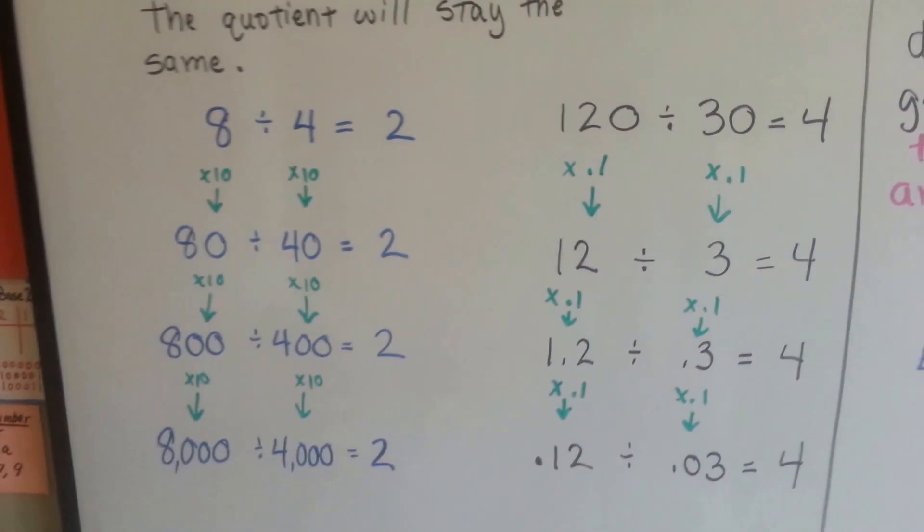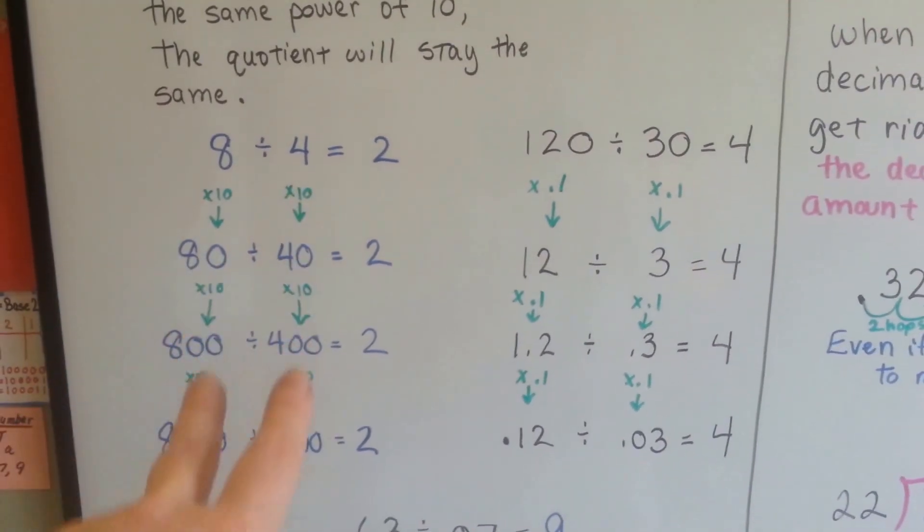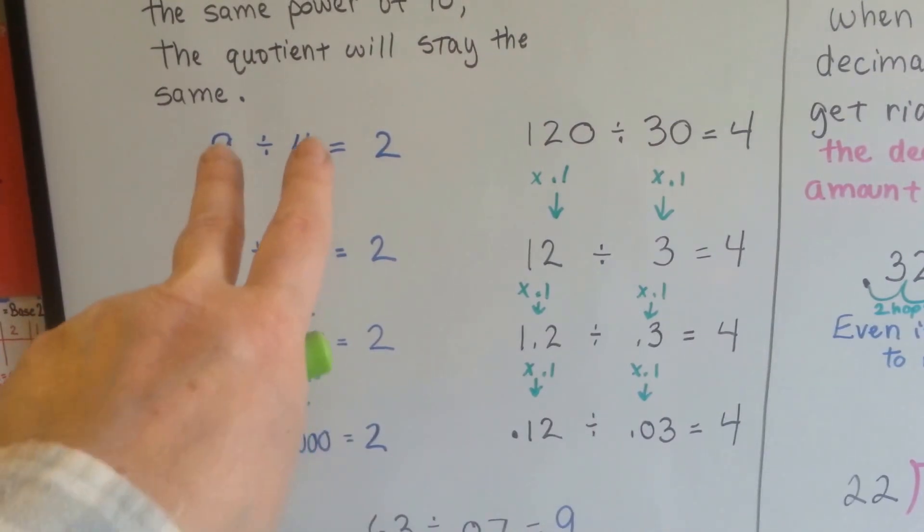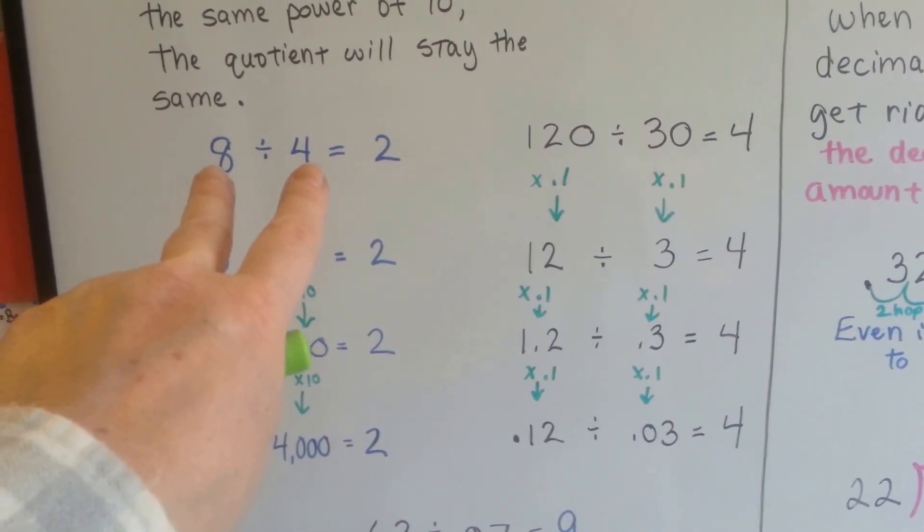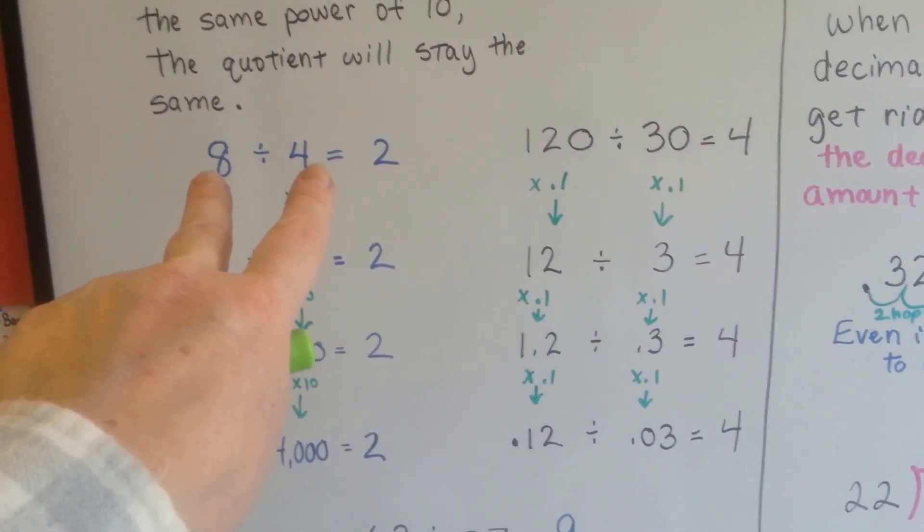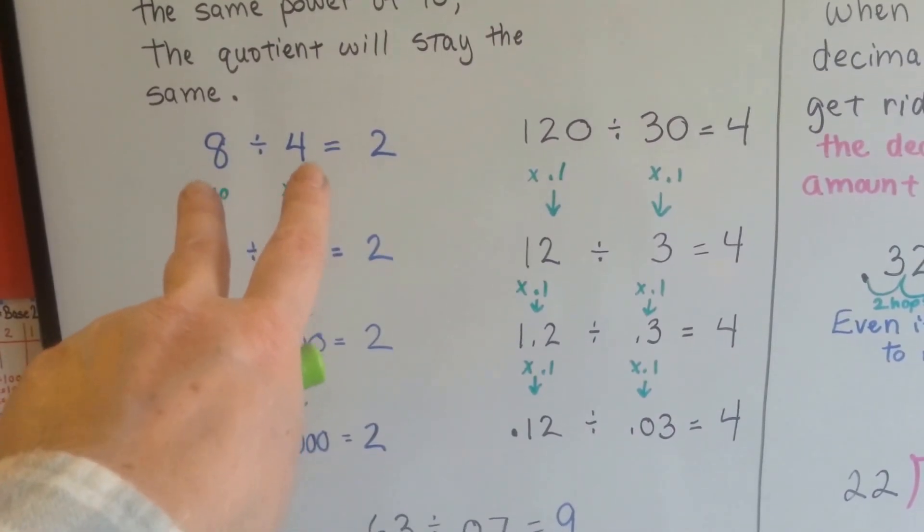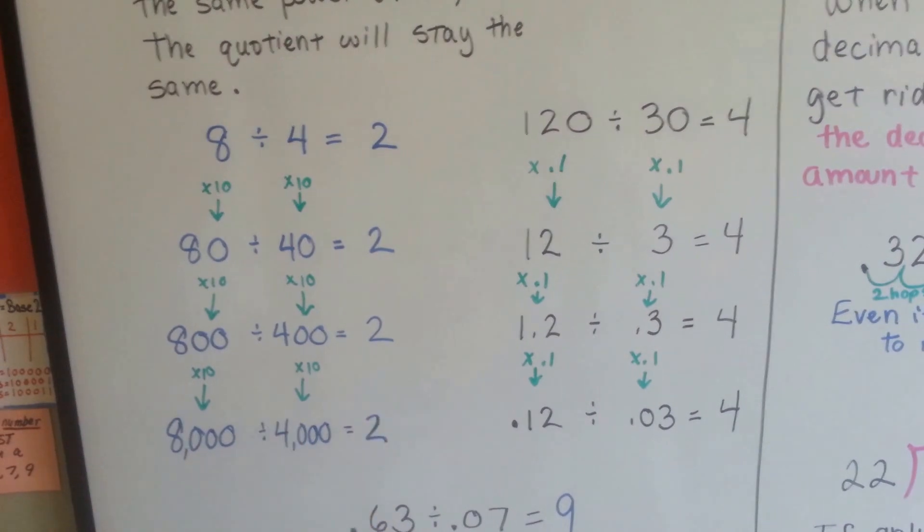Isn't that something? So they both are multiplied by the same amount, okay? So if we were back here and we multiplied 8 times 100 and 4 times 100, then we would be here. But see, we multiplied them by the same thing, alright? The answer is going to be the same.